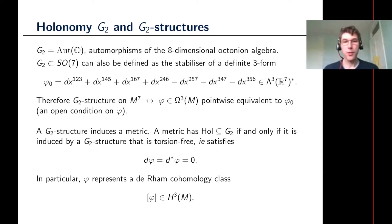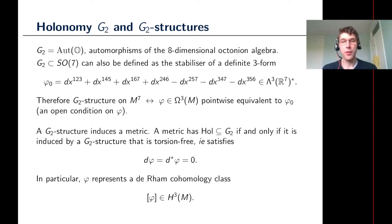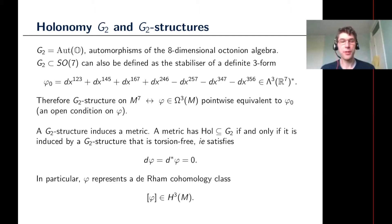What is the group G2? G2 is a 14-dimensional Lie group. The most natural way to describe it is that it's the automorphism group of the octonion algebra. The octonion algebra is what you get when you start with the real numbers, double to get the complex numbers, double that to get the quaternions, and then take the next step. Any automorphism must fix the real line inside the octonions, so the automorphism group acts on the imaginary part, meaning you can think of it as a subgroup of SO(7).